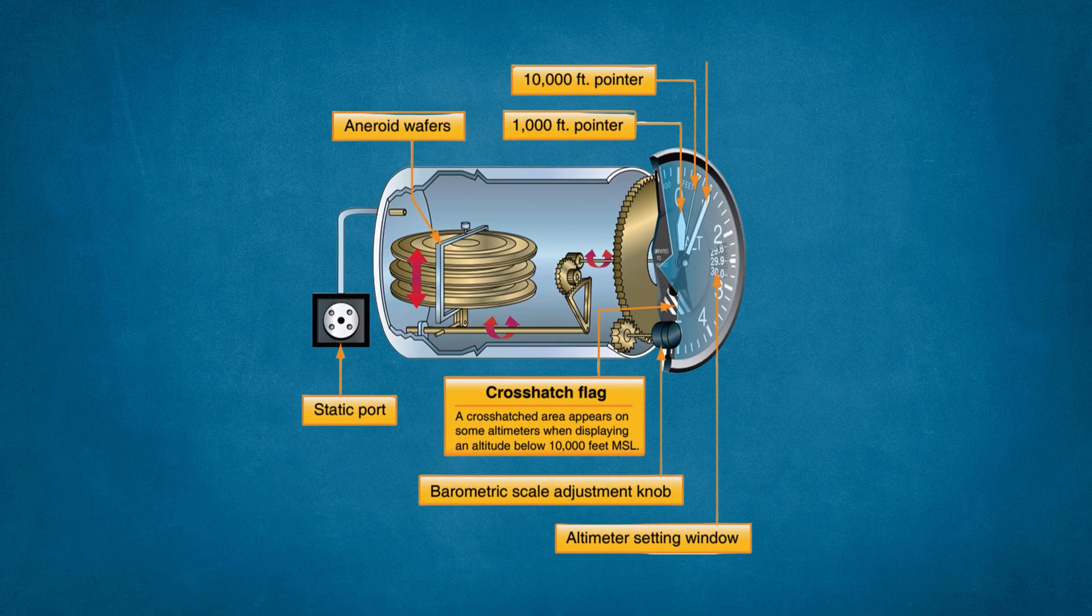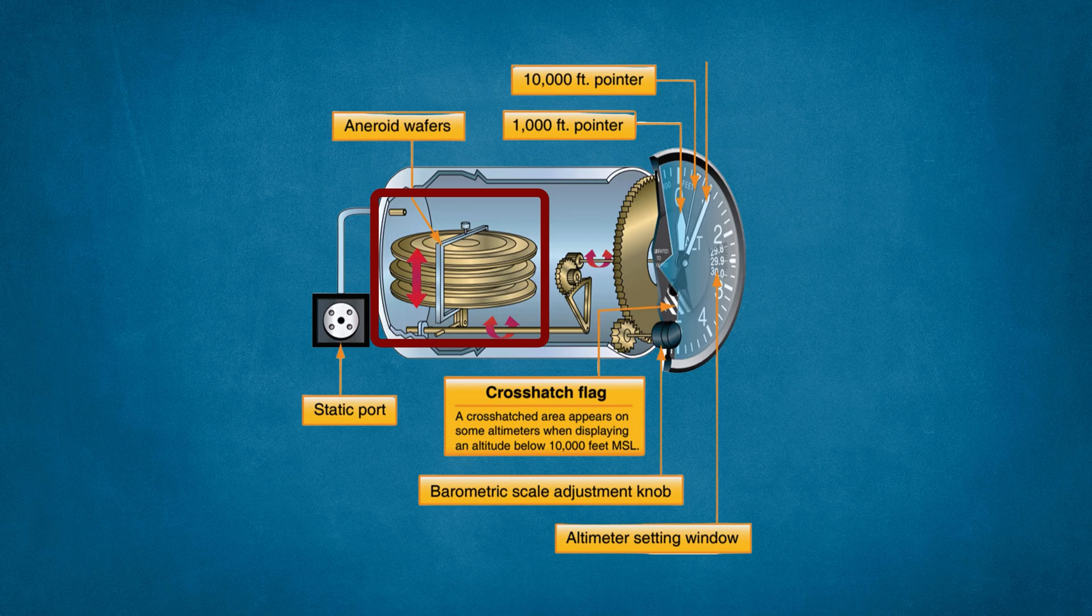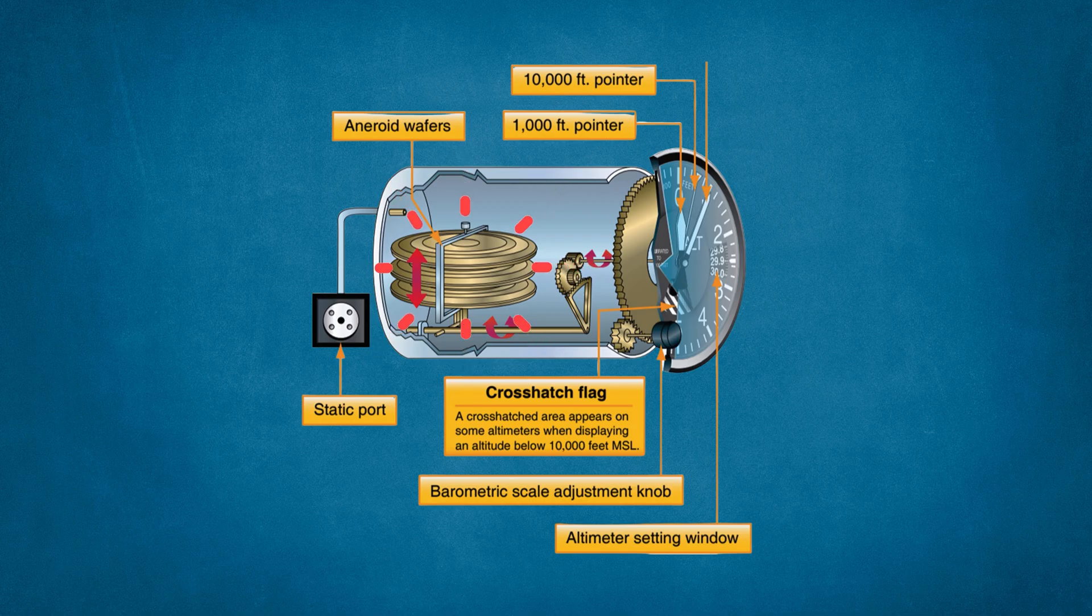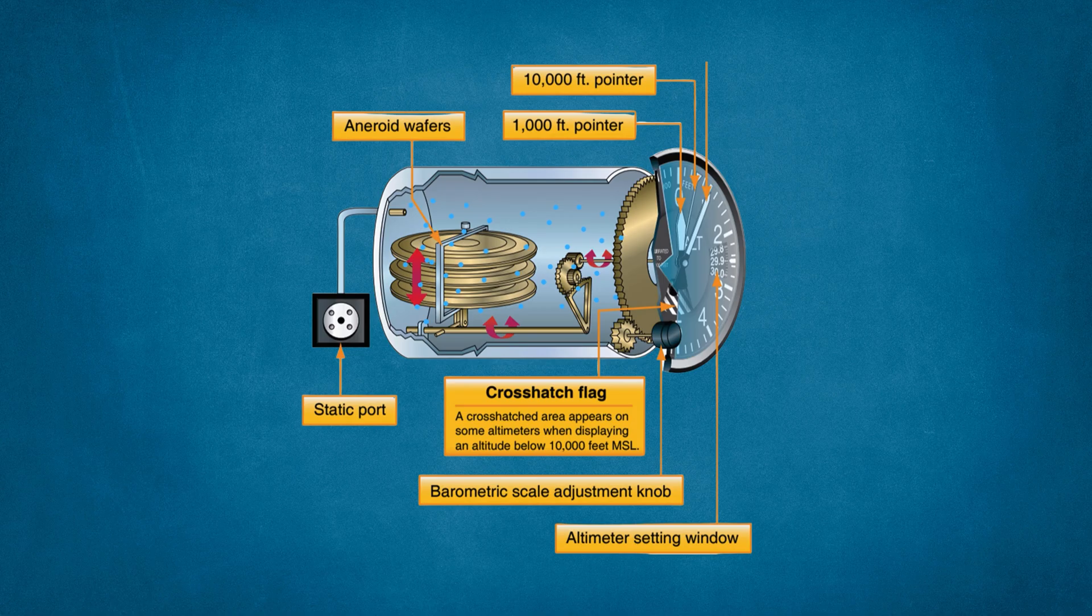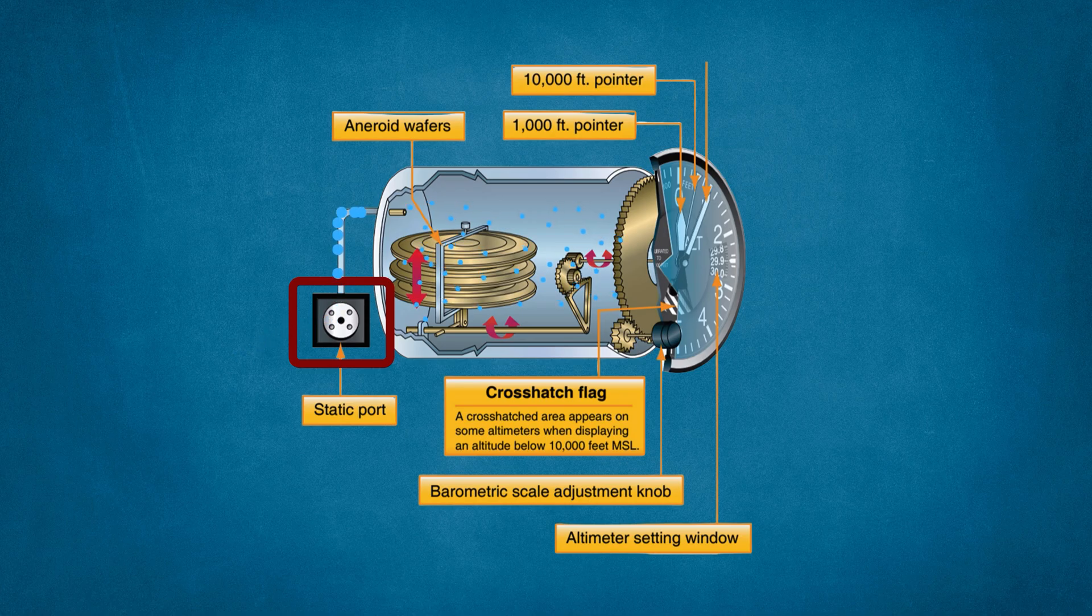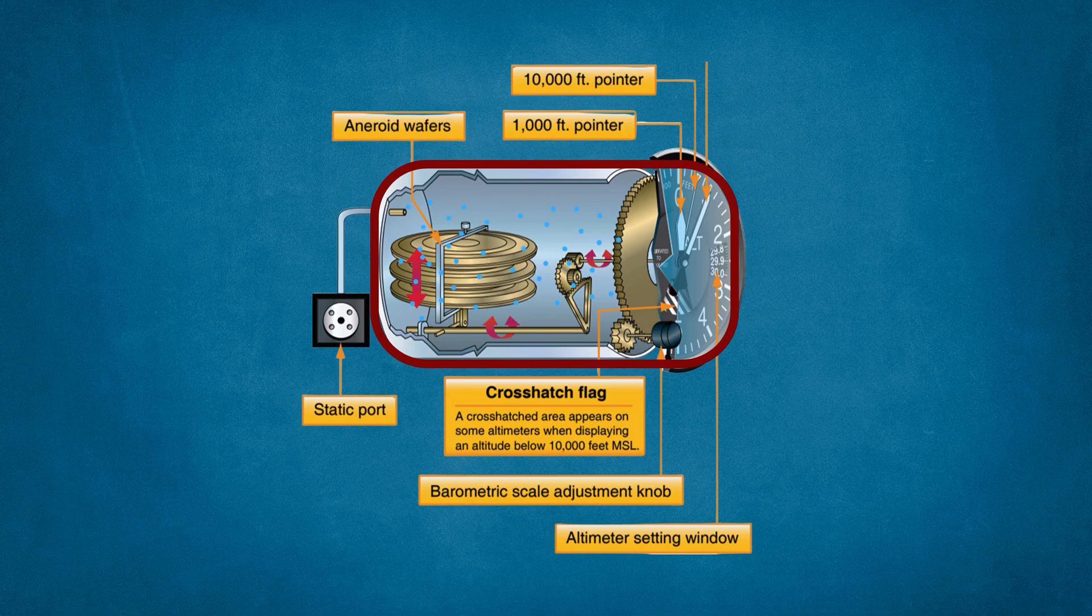A standard altimeter contains a stack of sealed aneroid wafers with an internal pressure of 29.92 inches of mercury. These wafers expand and contract based on the static pressure inside the casing of the altimeter. This static air enters the casing through a tube attached to the static ports on your airplane. The chamber is otherwise sealed, so only static air from directly outside the airplane enters the chamber.